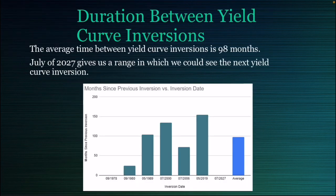In this bar graph, I show six times that the yield curve inverts and I looked at the time duration between those inversions. When you average it all out, the average time duration between inversions is 98 months. If that stays consistent, we could get in the ballpark of the next inversion by July 2027.